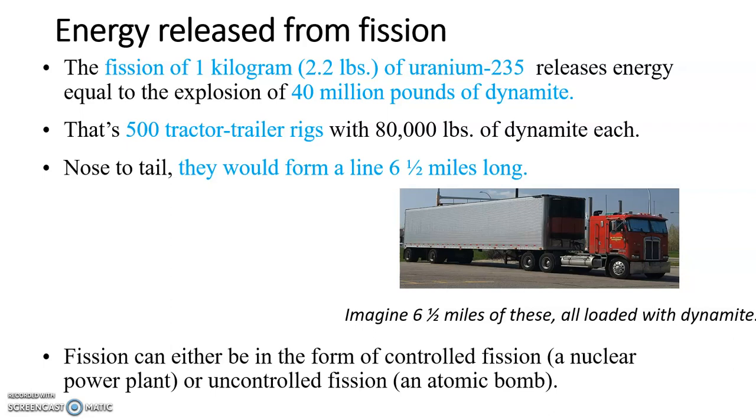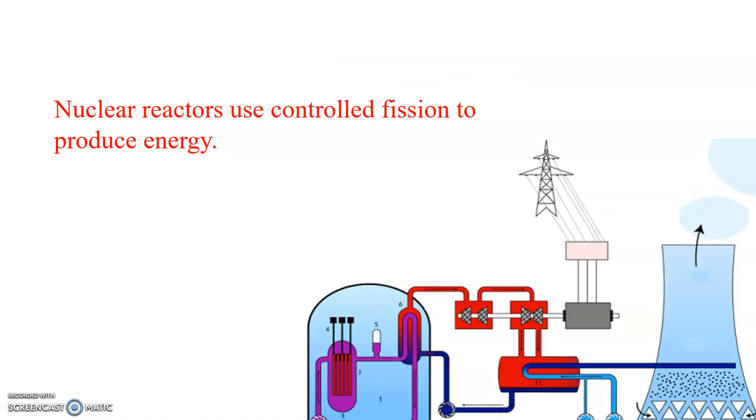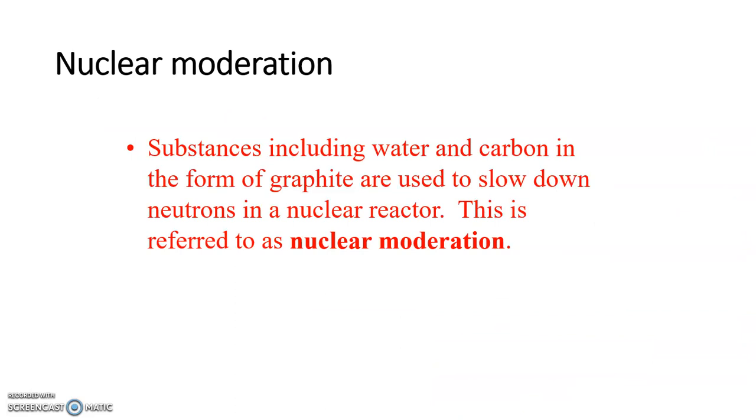You can have either controlled fission or uncontrolled fission. Uncontrolled fission is obviously an atomic bomb. Controlled fission is what we're going to spend more time talking about in a nuclear power plant. They don't release all this energy at once - it's in a more controlled method. One of the ways they control the release of energy is something called nuclear moderation.